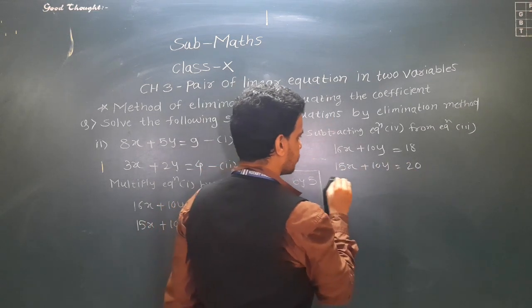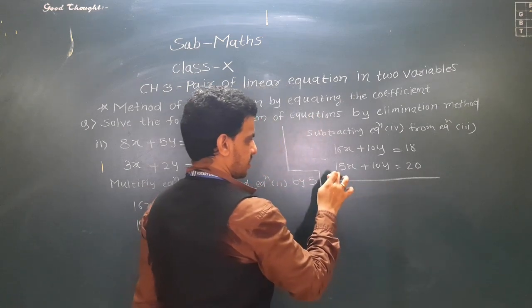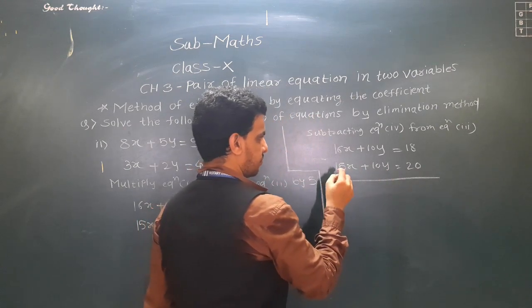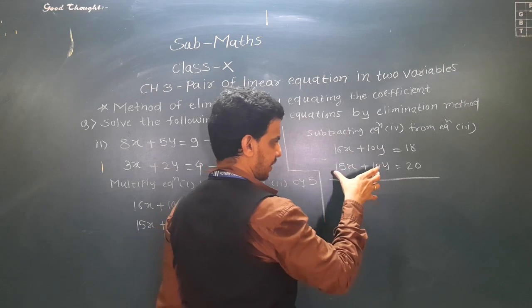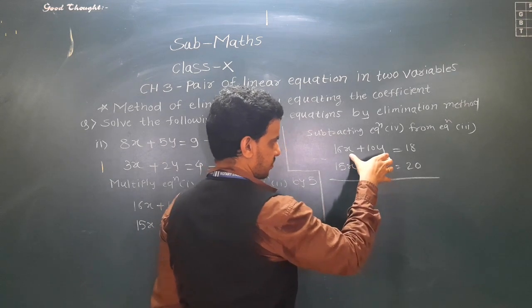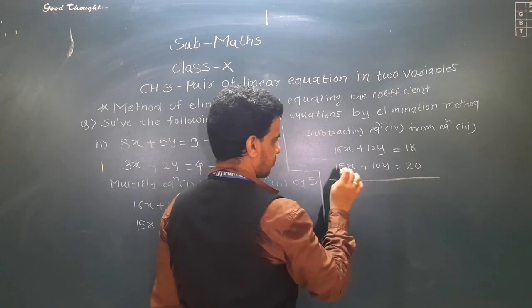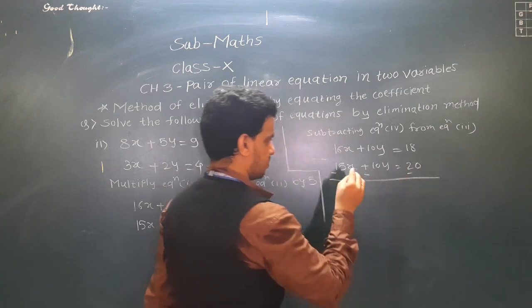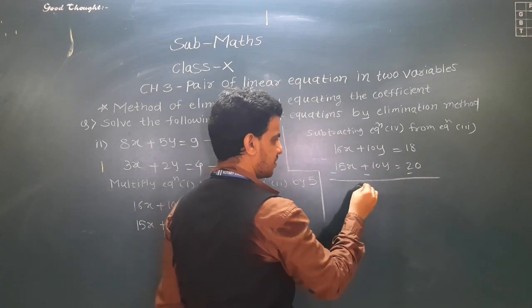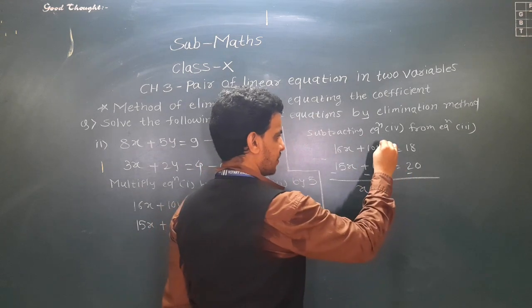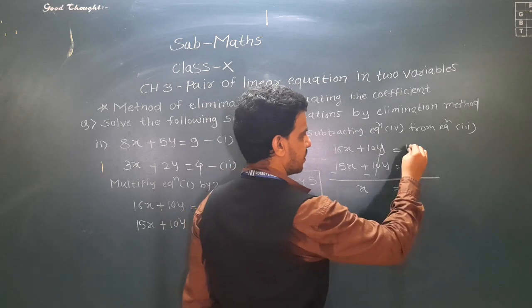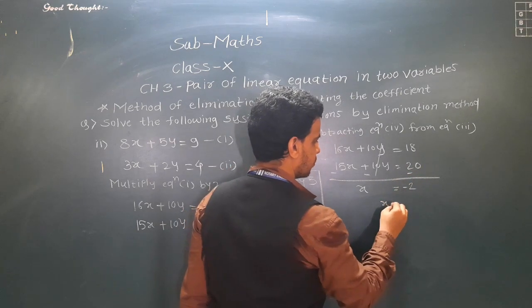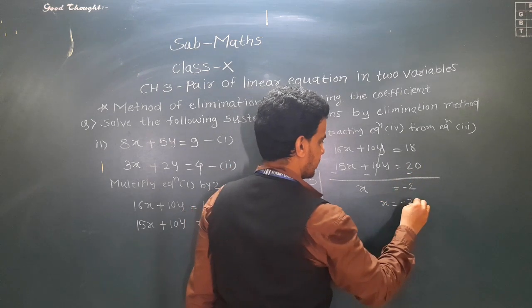Subtracting equation 4 from equation 3: the signs of equation 4 change. 16x − 15x = x, and 10y − 10y cancels. 18 − 20 = −2, so x = −2.